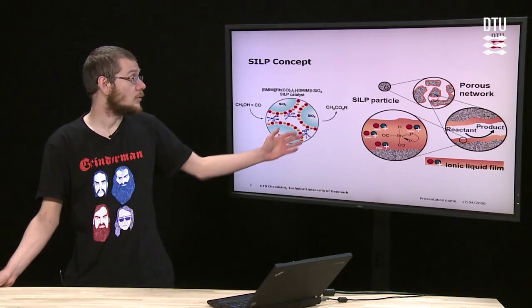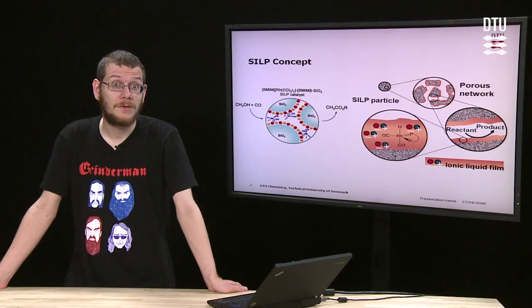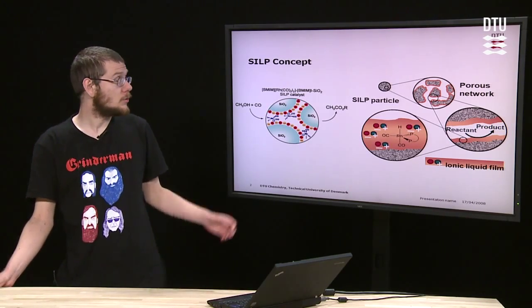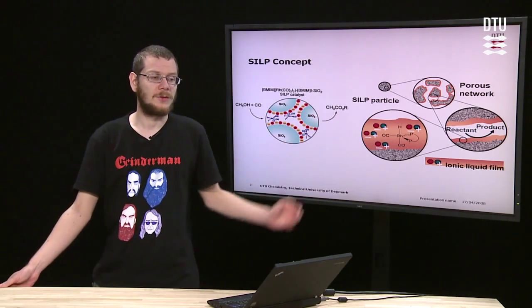You take a solid, as seen here, you take a layer of an ionic liquid, you put this on top of the solid and you dissolve a catalyst in it. What you then do is you feed in your reagents, in this case methanol and carbon oxide, and we get our products out at the end.